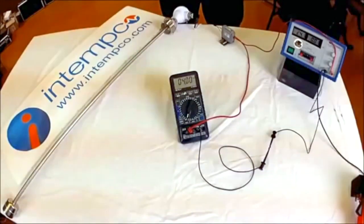4 to 20 milliamp current loops are quite common in industrial and sanitary control systems. They are very resistant to ESD and changes in voltage. Hopefully this demonstration will show you why.